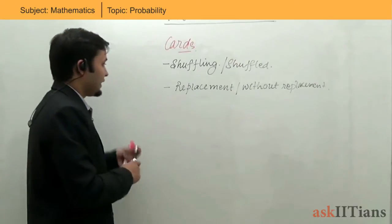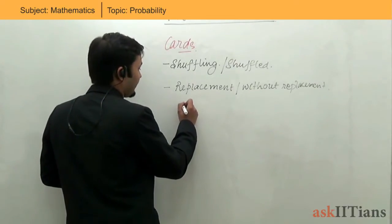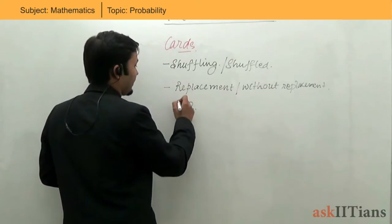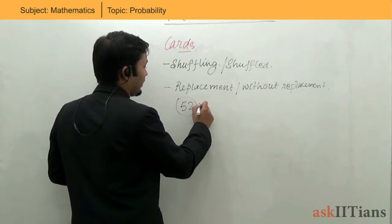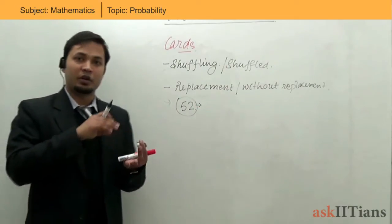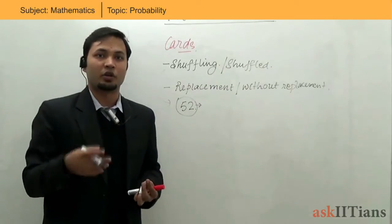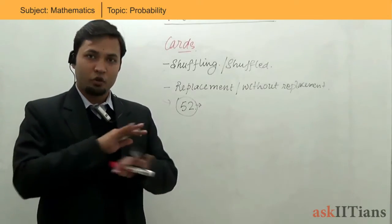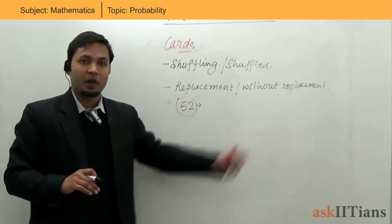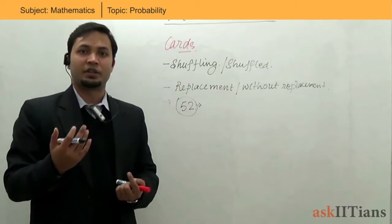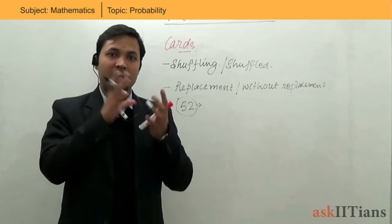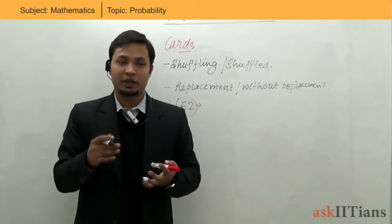Let's say you have a pack of 52 cards, well shuffled. When we shuffle it there is no biasness — it is not repetitive that a king will come out or the queen will come out. Now, with replacement and without replacement: let's say I'm doing an event where I have to find out whether a certain card is appearing or not in, say, five events.